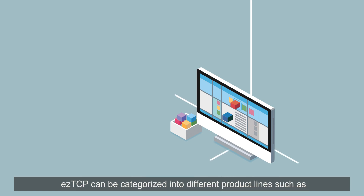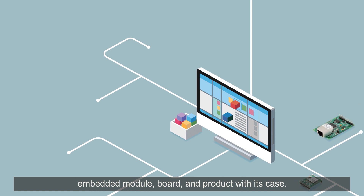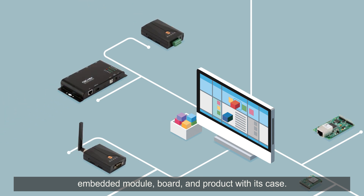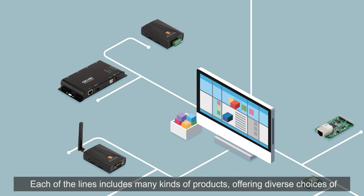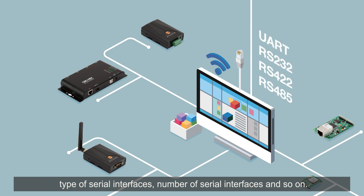EasyTCP can be categorized into different product lines such as embedded module, board, and product with its case. Each line includes many kinds of products offering diverse choices of wireless and wired networking, type of serial interfaces, number of serial interfaces, and so on.